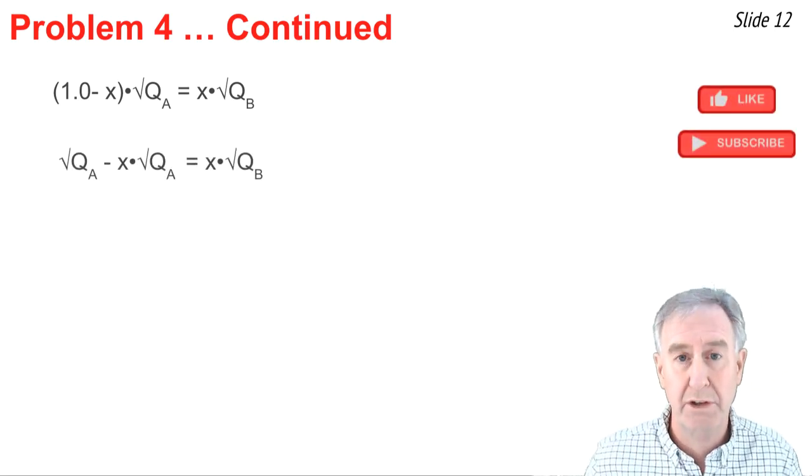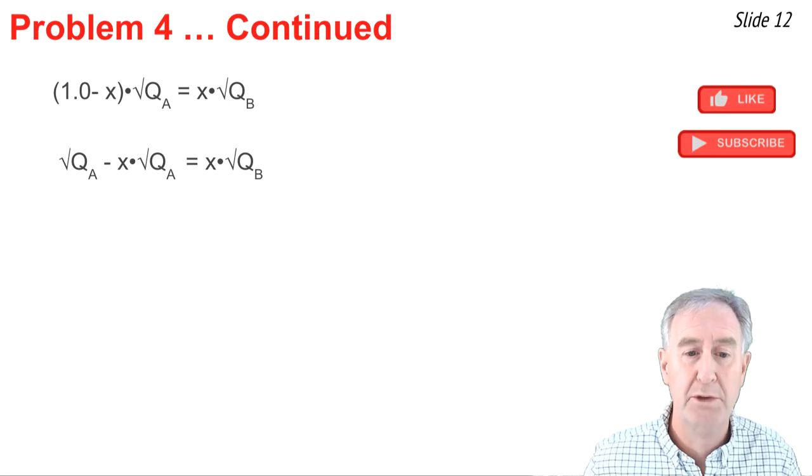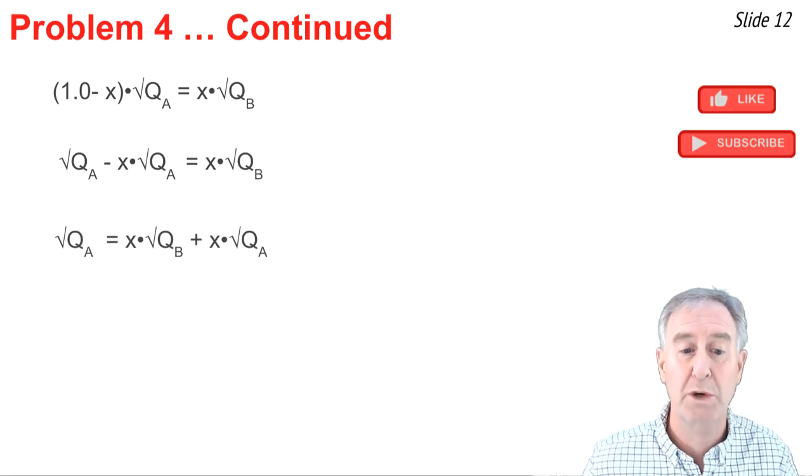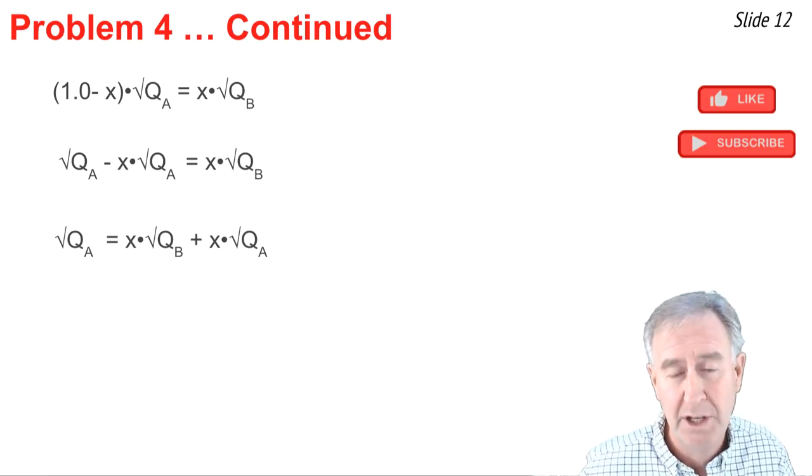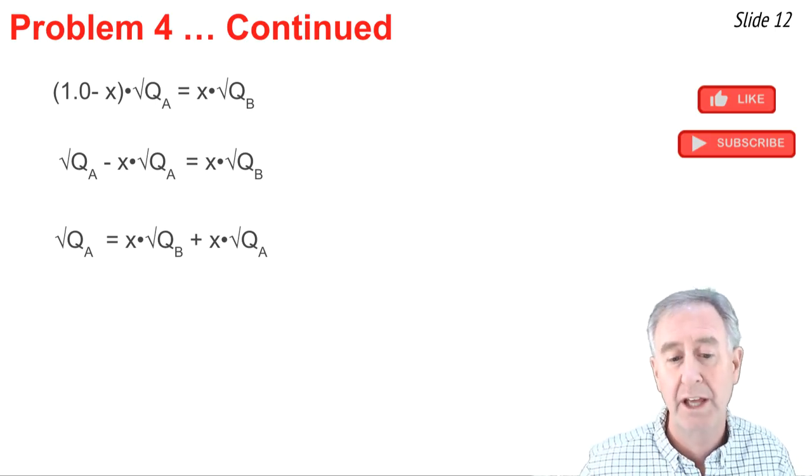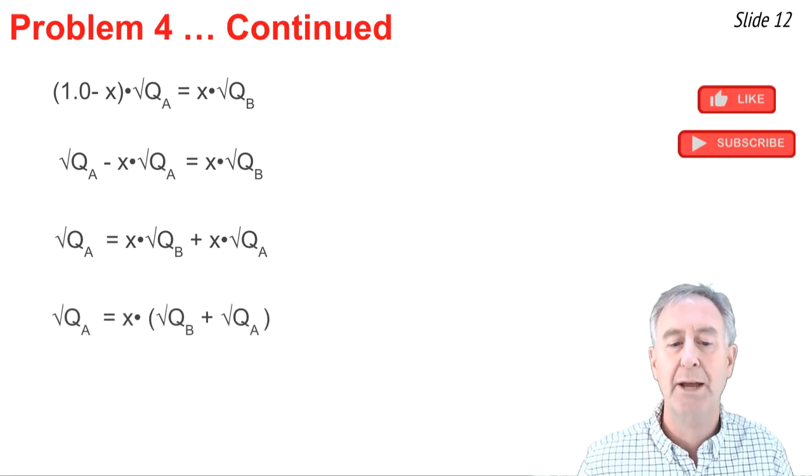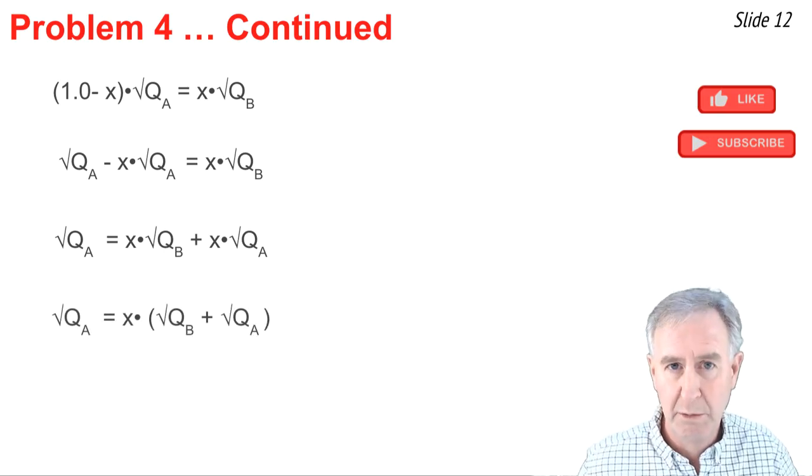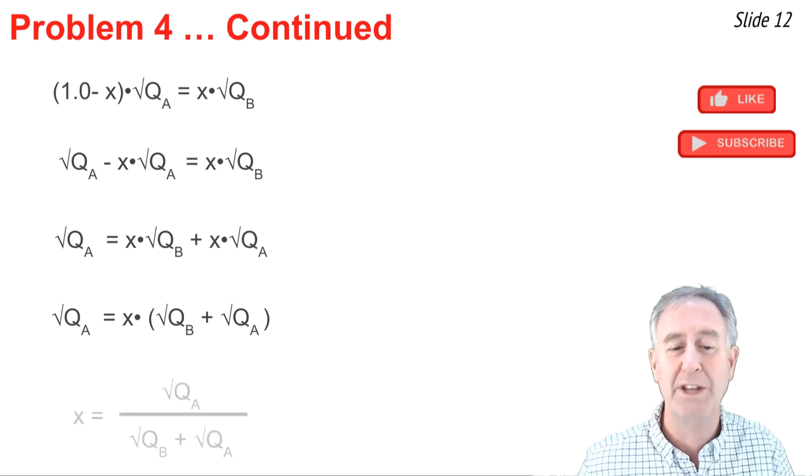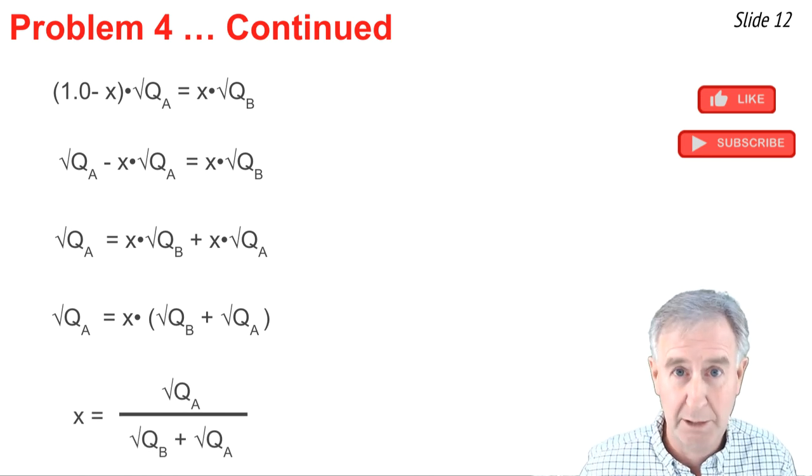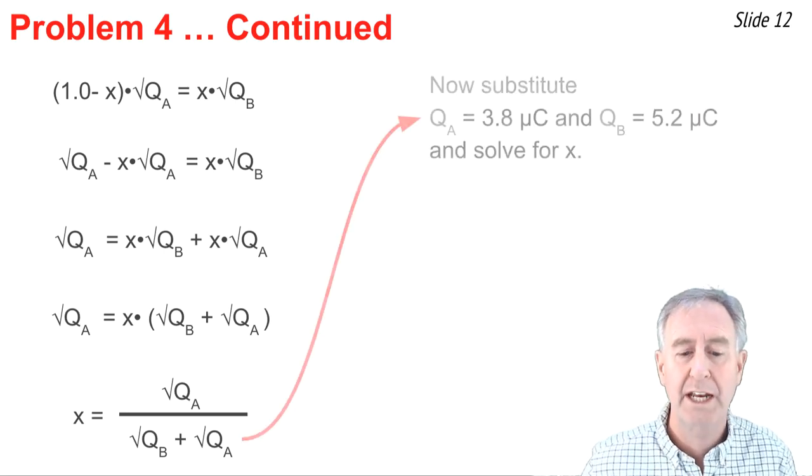So I'm going to begin by distributing the square root of QA to both terms inside of that parenthesis. And then I'm going to try to get the x terms by themselves on the same side of the equation. Now that they're there, I'm going to factor out the x, and then I'm going to divide through both sides of the equation by what's in the parenthesis on the right side, and I end up with this.